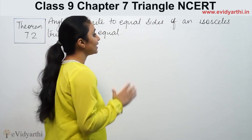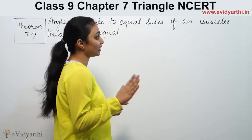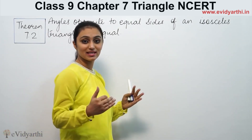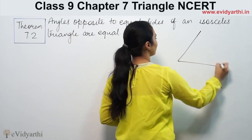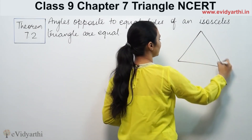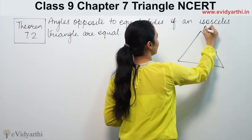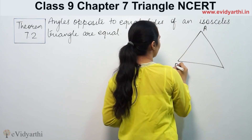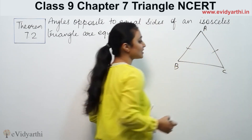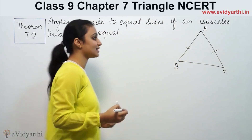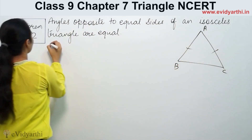We are given that the triangle is isosceles, which means two sides are equal. This is the triangle with vertices A, B, and C. Isosceles means two sides are equal — that is given.